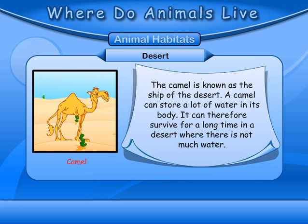Desert: The camel is known as the ship of the desert. A camel can store a lot of water in its body. It can therefore survive for a long time in a desert where there is not much water.